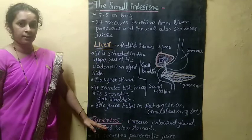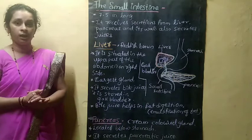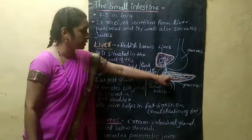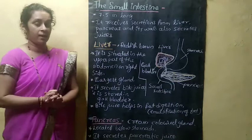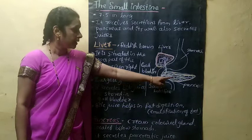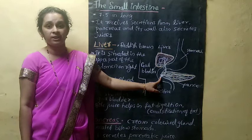Next we will discuss about the pancreas. The pancreas is a cream-colored gland and it is located below the stomach region. It also secretes a juice called pancreatic juice, which enters the upper part of the small intestine.